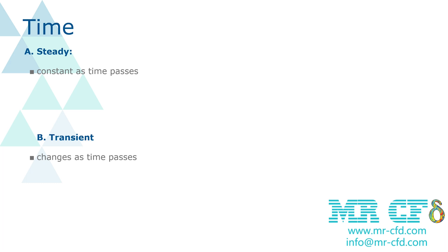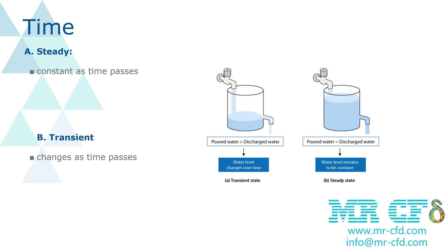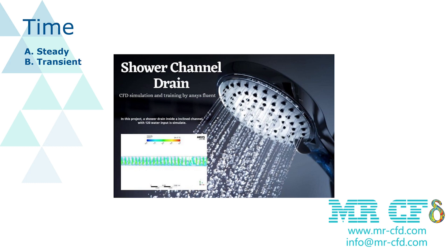Steady-state solutions are still used in computational fluid dynamics due to lower computational cost and reduced simulation time. However, most simulations in ANSYS Fluent, such as multi-phase flows and rotating machines, are transient. All steady solutions can also be performed using the transient solver. For example, consider a shower: when you open the water, the temperature is initially cold, then too hot, and finally reaches the optimum temperature — representing a transient process.